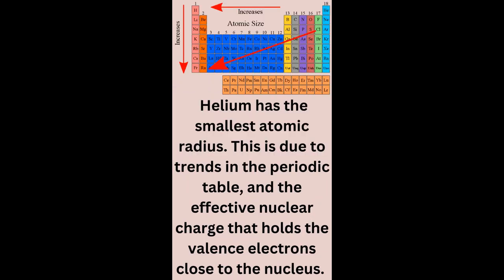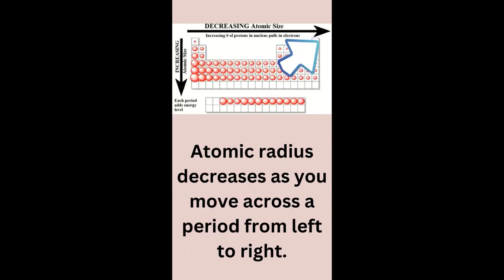Helium has the smallest atomic radius. This is due to trends in the periodic table and the effective nuclear charge that holds the valence electrons close to the nucleus.